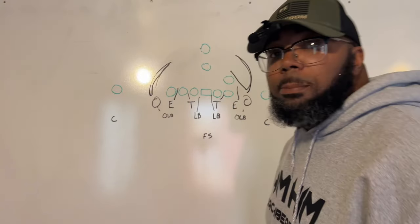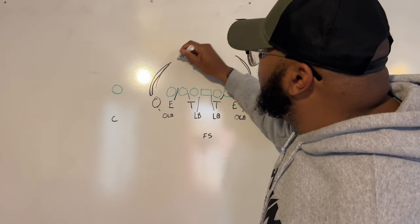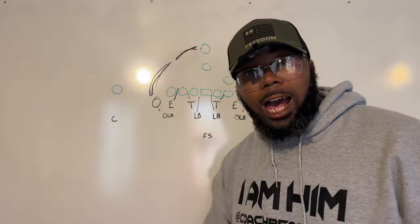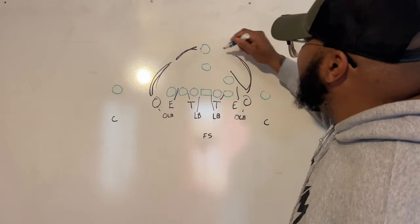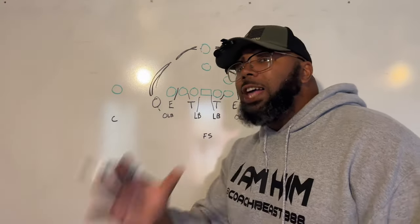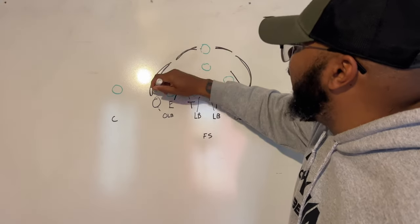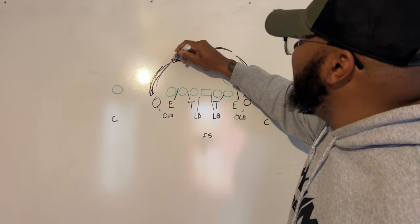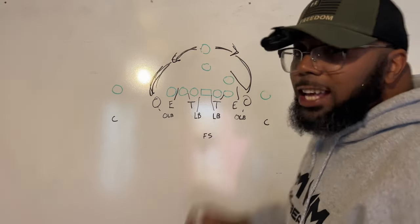If this running back gets the ball, the running back should be meeting our guy. He should be meeting our guy. If our outside linebacker is taking his angle correctly, he's going to meet this guy, and it's going to be nasty and physical.